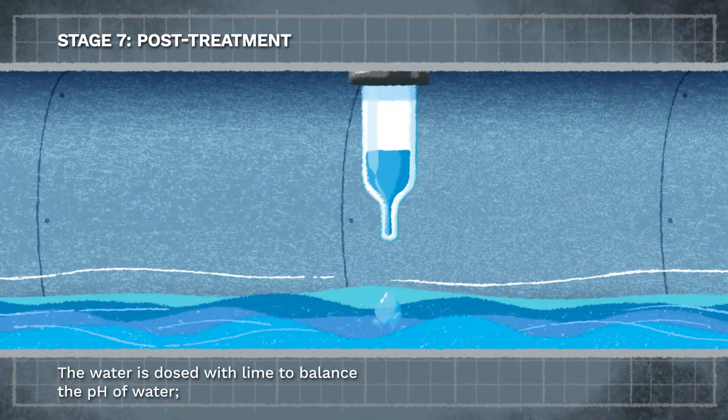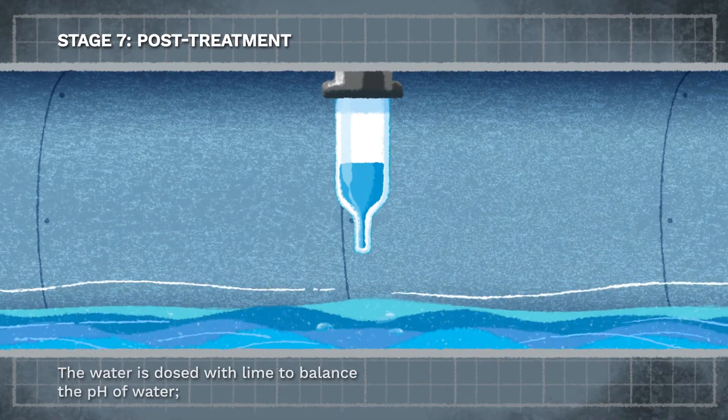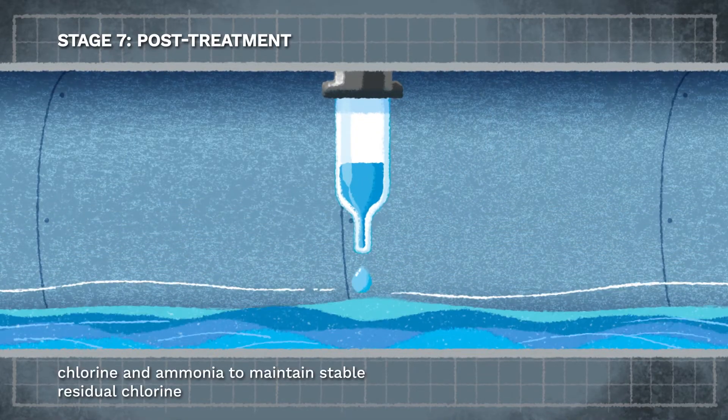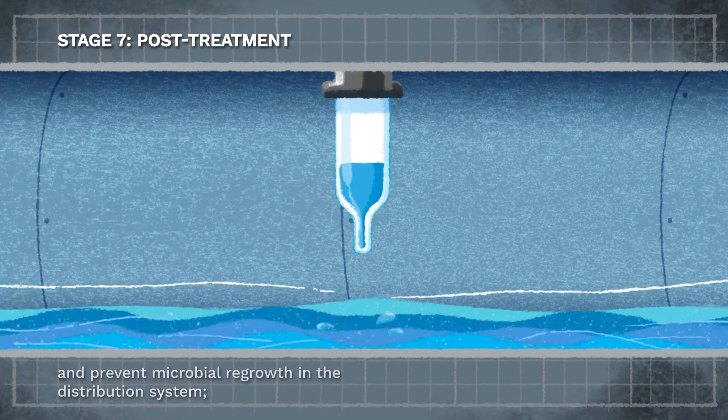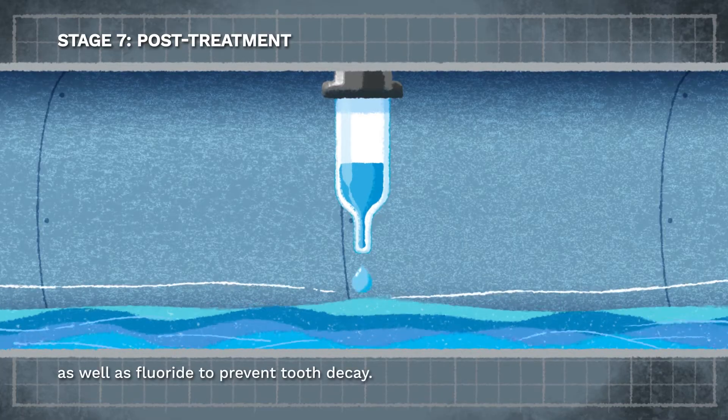The water is dosed with lime to balance the pH of water, chlorine and ammonia to maintain stable residual chlorine and prevent microbial regrowth in the distribution system, as well as fluoride to prevent tooth decay.